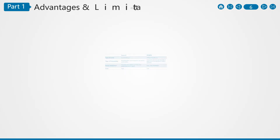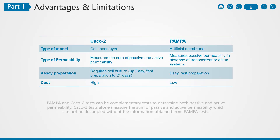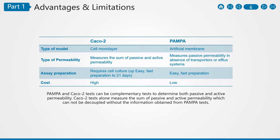PAMPA and CACO2 tests can be complementary tests to determine both passive and active permeability. CACO2 tests alone measure the sum of passive and active permeability, which cannot be decoupled without information obtained from the PAMPA tests.